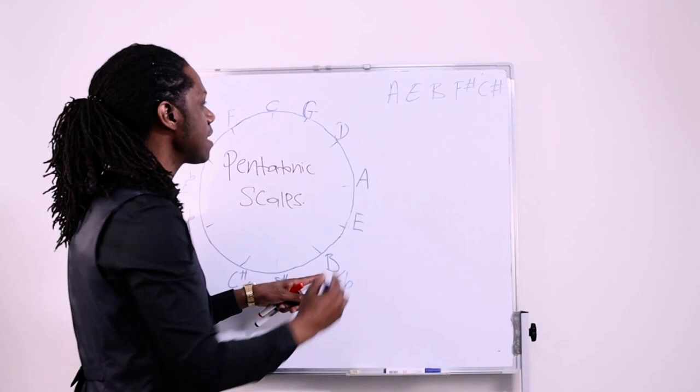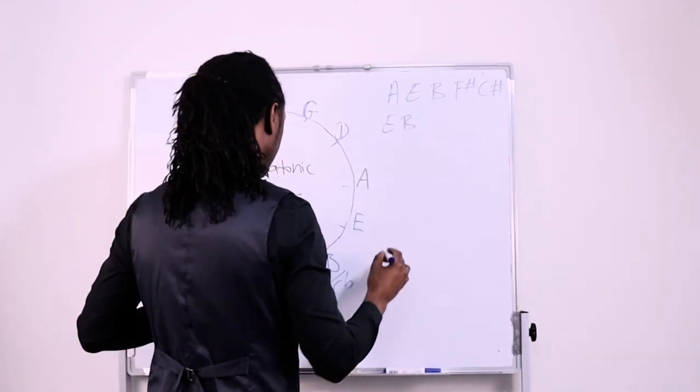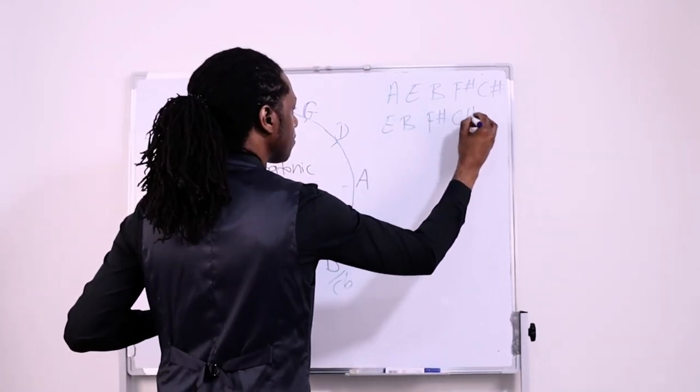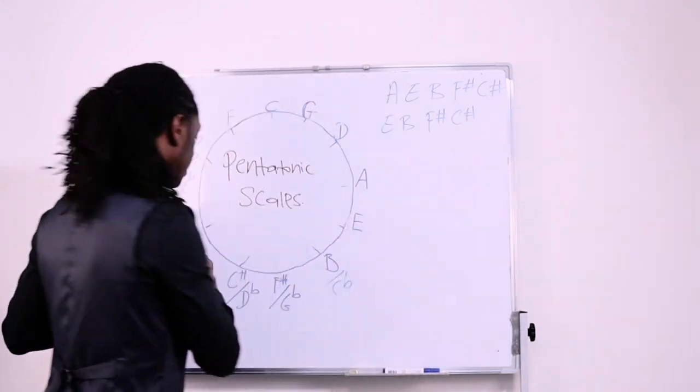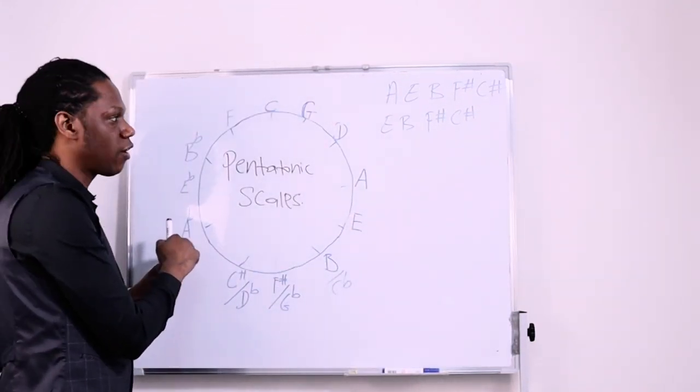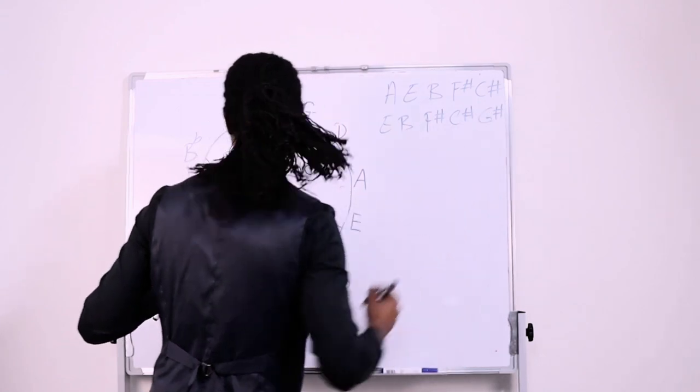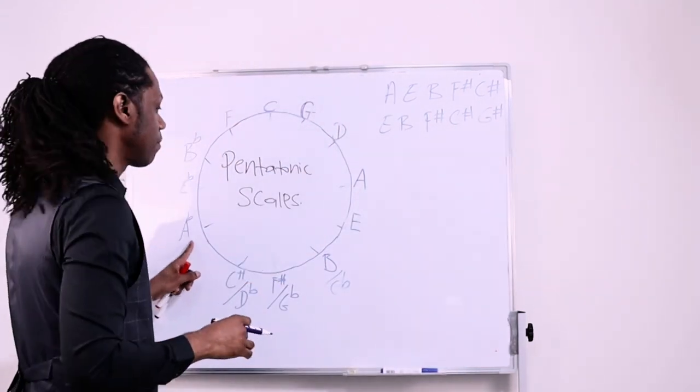How about E, okay? E, B, F sharp, C sharp, and G sharp. Because A flat and G sharp harmonically are the same. G sharp. Okay? And you can reorganize them.